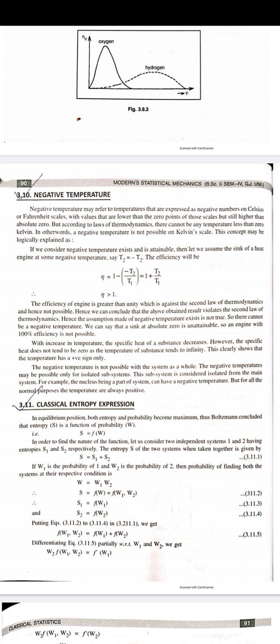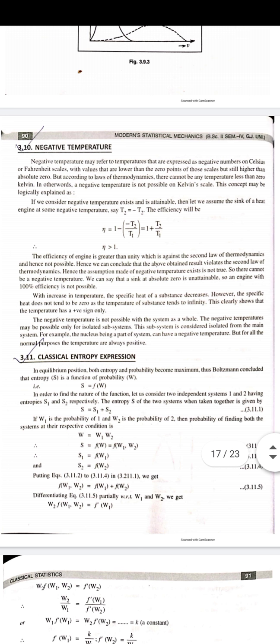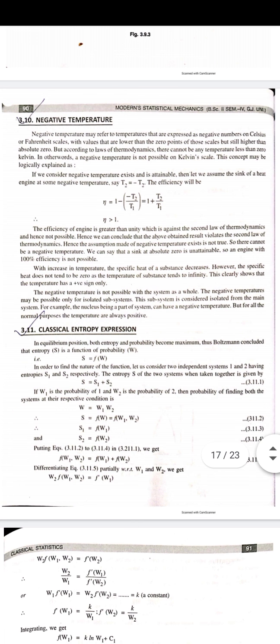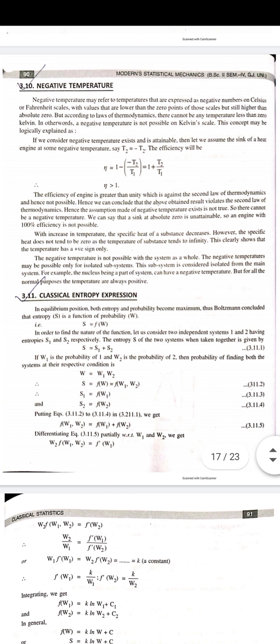Let's consider if negative temperatures are attainable, or if the sink of a heat engine is at some negative temperature. Say that T2 equals negative T2. Then efficiency will be 1 plus T2 by T1. Here, efficiency is greater than 1 because 1 is added to T2 by T1. So efficiency will be more than 100 percent.